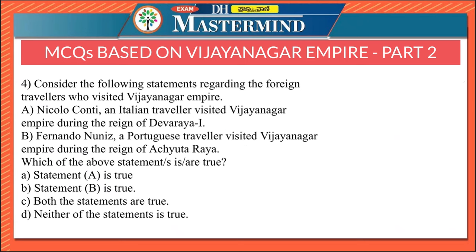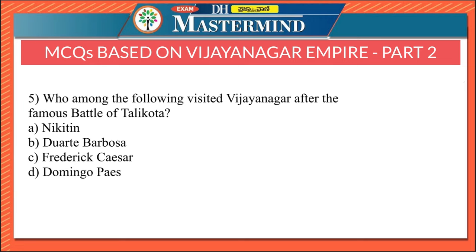The fourth question considers foreign travelers who visited Vijayanagara Empire. Statement A says Nicolo Conti, an Italian traveler, visited during the reign of Devaraya 1; Statement B says Fernando Nunes, a Portuguese traveler, visited during the reign of Achutaraya. Both statements are true — Option C. Achutaraya was a successor of Krishna Devaraya.